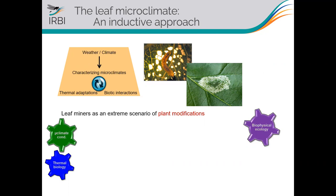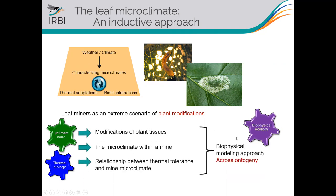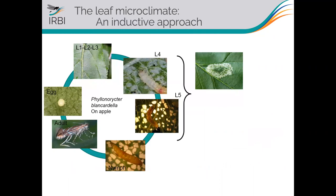You can see the mine from the top, and here is the caterpillar inside the plant tissues. We characterized the modification the insect generates to plant tissues, and then computed the macroclimate within the mine — predicting mine temperature using a biophysical modeling approach across the ontogeny of the leaf miner as it develops gradually. We then established the relationship between thermal tolerance and the macroclimate within the mine.